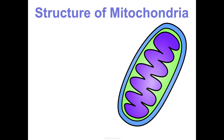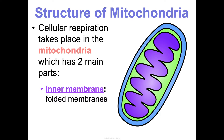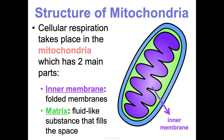Just like in photosynthesis with the chloroplast, cellular respiration happens in the mitochondria, and it has two parts as well. It has the inner membrane, which is folded membranes also known as cristae, and it has the mitochondrial matrix, which is the fluid-like substance that fills up the space around it.